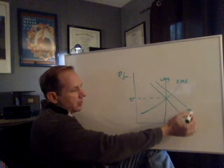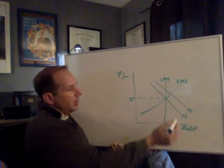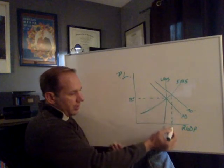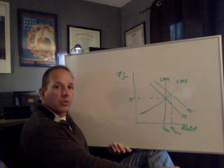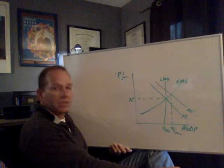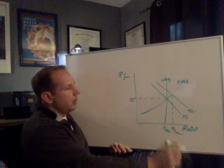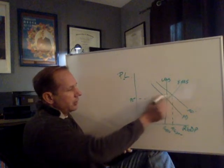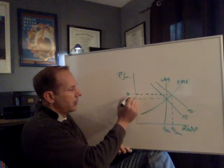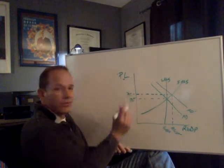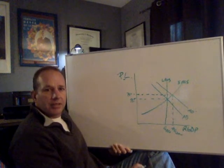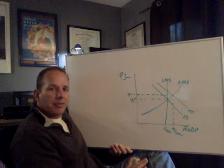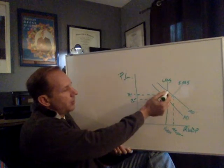This increase in output comes from others working more hours to make stuff for Mary Ann because she found money. To get them to do that, she's initially going to have to pay higher prices. That's the short-run effect.